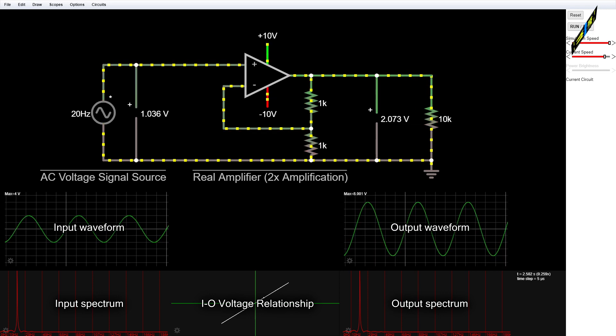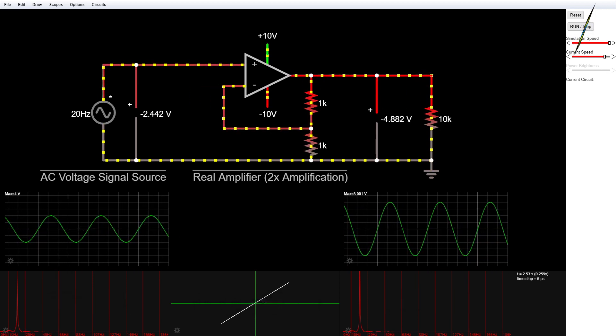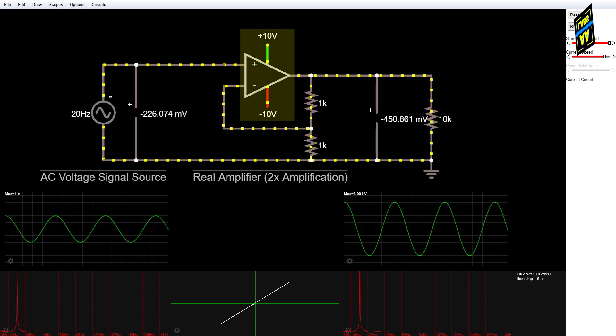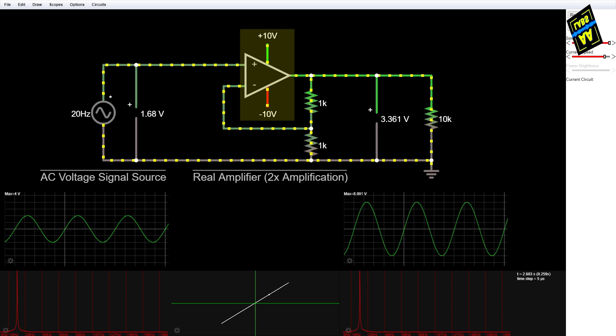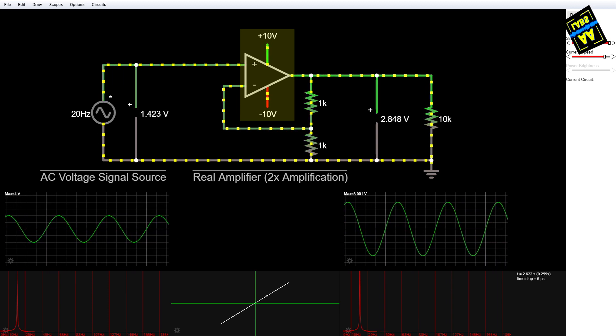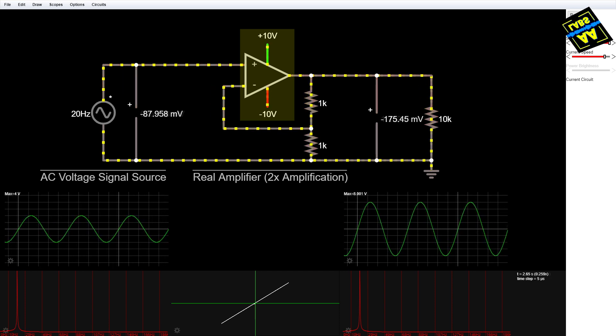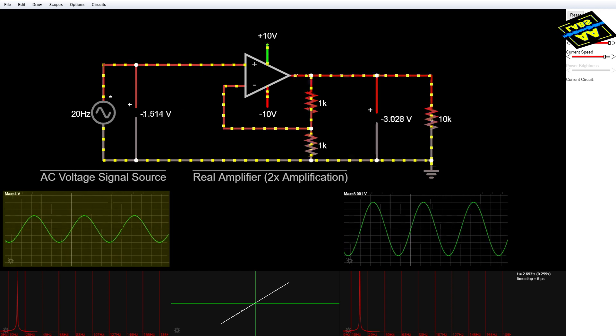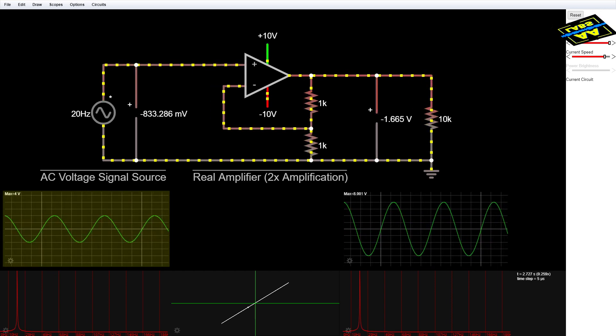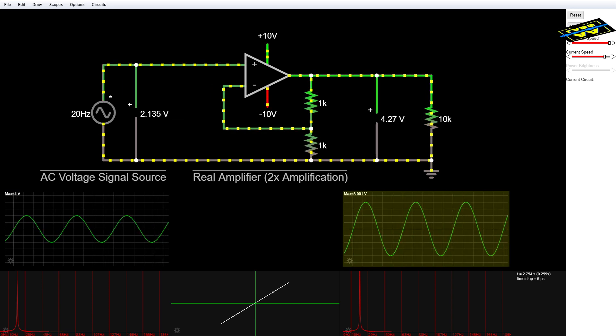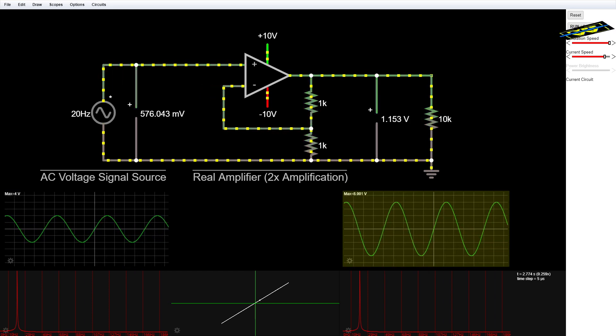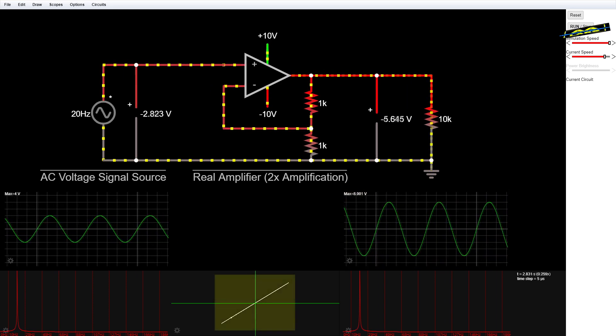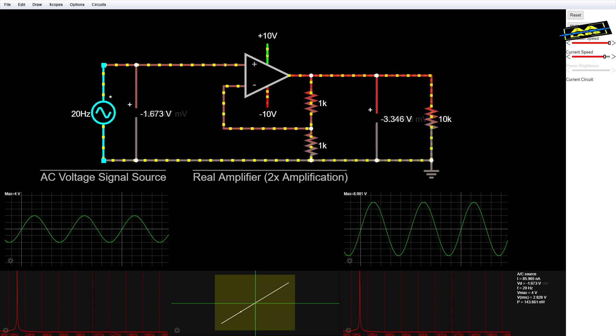To further illustrate this concept, I created a simulation in Paul Falstad's circuit simulator. For simulation purposes, I'm using an input signal of 20 hertz and an operational amplifier with supply voltages of plus or minus 10 volts. This particular op amp saturates at about plus or minus 9 volts, slightly less than its supply voltage. When I input a pure sinusoid with an amplitude of 4 volts, the op amp can amplify to 8 volts without saturating. So our output is also a pure sinusoid of the same frequency, with little to no distortion. We can see in the xy plot that our input-output relationship is linear.